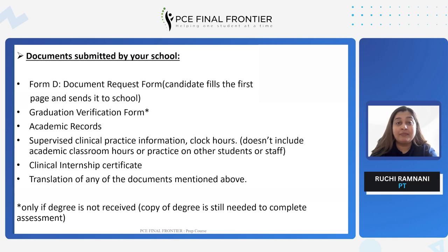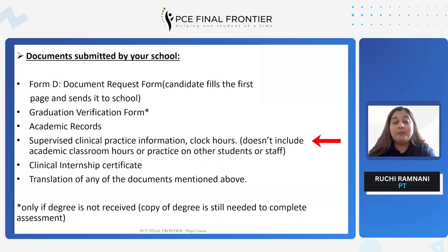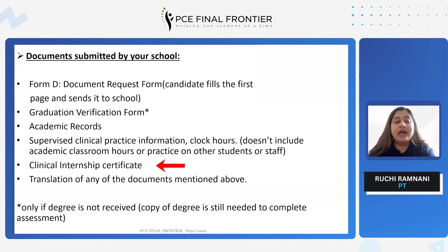The other documents that need to be sent by a college or school are the academic records. The next one is the supervised clinical practice information — clock hours. These do not include academic classroom hours or practice on other students or staff. They include your internship hours or the clinical hours from your rotations of third and final year. CAPR requires a total of 1,025 hours for the credentialing process, of which a minimum of 100 hours are needed for musculoskeletal and neurological conditions each, and 40 hours for cardiorespiratory conditions. Other documents include the clinical internship certificate and translation of the above documents if they are not in English or French.